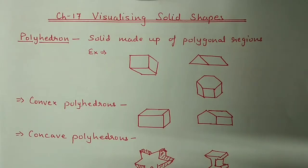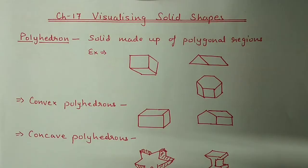Hello students, we are doing chapter number 17 - Visualizing Solid Shapes - and today we will start exercise 17.2. This exercise is based on polyhedrons. Polyhedrons means the solids which are made up of polygonal regions, meaning with straight lines.